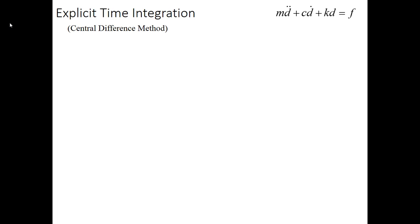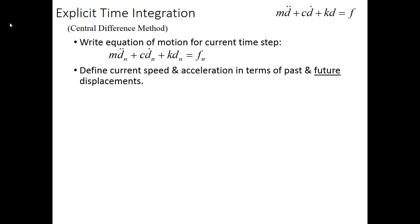So let's walk through the process for explicit time integration. Again, we're solving the equation of motion shown there. We're going to use the central difference method. So we start out by writing the equation of motion at the current time step, not the future, but the current time. And then we're going to define the current speed and acceleration in terms of the past displacements, but also the future displacements, which is a little bit odd. But again, what we're trying to find here is a formula for future displacements. So that's where they come in.